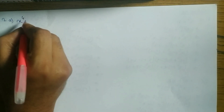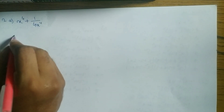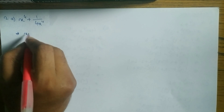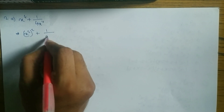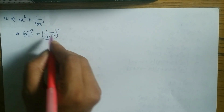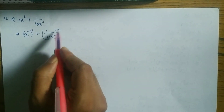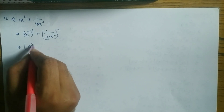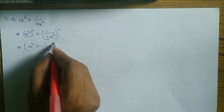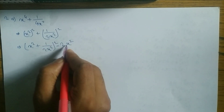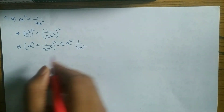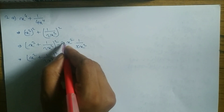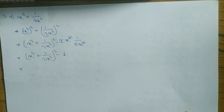Next — question number 2a: x⁴ + 1/(4x⁴). Same as question 1 — we convert into whole squares: (x²)² + (1/(2x²))². Note: (1/(2x²))² = 1/(4x⁴). This is in the form of a² + b², so we apply the formula: (x² + 1/(2x²))² − 2 × x² × 1/(2x²) = (x² + 1/(2x²))² − 1, since the 2 and x² cancel.